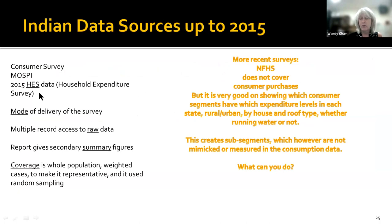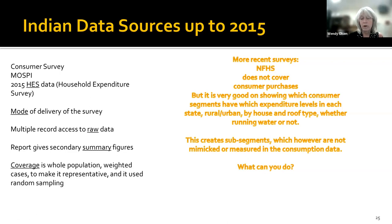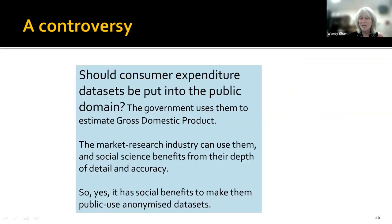This is the source of the India data. Currently it's eight years old, but we're hoping to see more data sets released by India for open access use. More recently, we have the National Family and Health Survey in India, which doesn't cover consumer purchases but is very recent — 2021-22 — and is very good on showing which consumer segments have expenditure levels in each state by quintile and decile. Should consumer expenditure data sets be put into the public domain? The government uses these to estimate gross domestic product, but other researchers can use them to make predictions and benefit from the depth of detail. If possible, governments could anonymize the data and release them to the public. Very often they're released with the restriction of no commercial use, so academics are helpful if we analyze them and provide summaries to the business community.